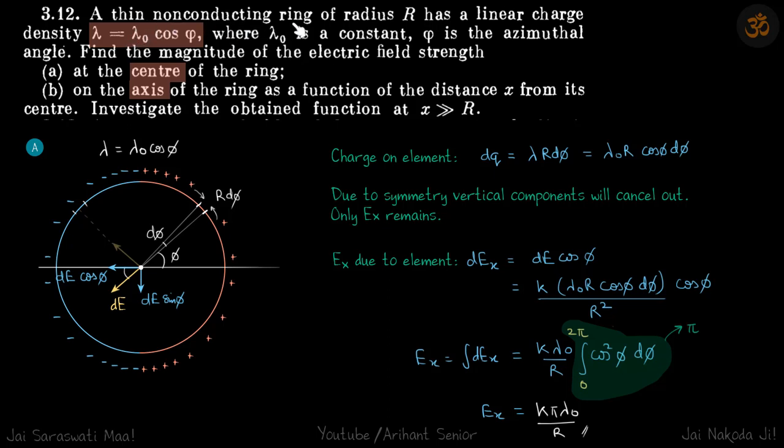We are given a ring where the linear charge density varies as lambda naught cos phi, where phi is this angle. We need to find the field at the center of the ring and on the axis of the ring at a distance x.